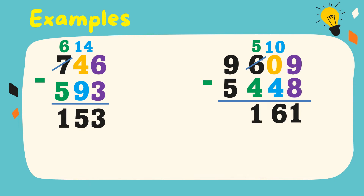5 minus 4 is equal to 1. 9 minus 5 is equal to 4. The difference is equal to 4,161.